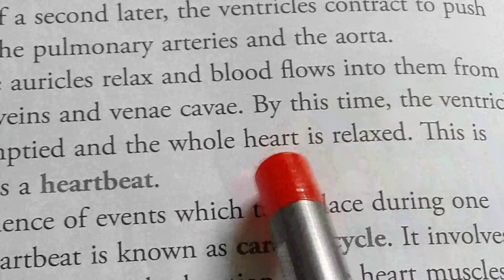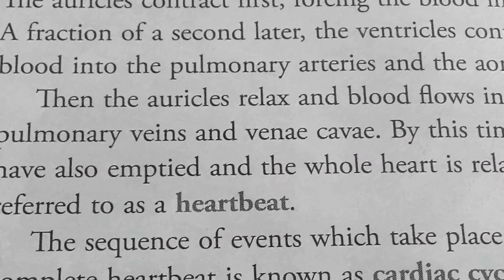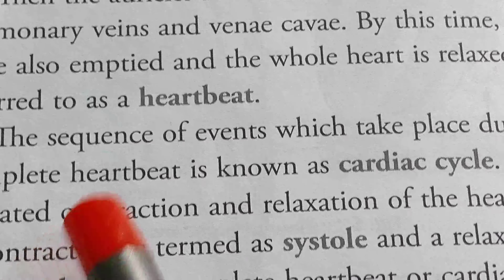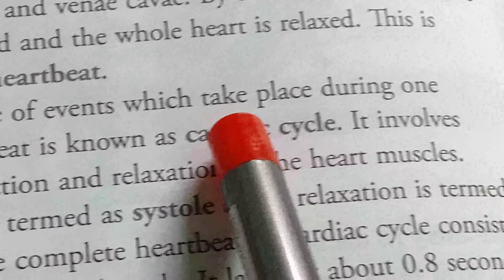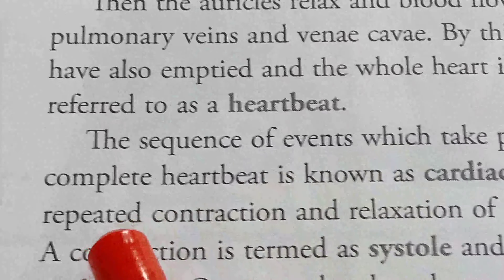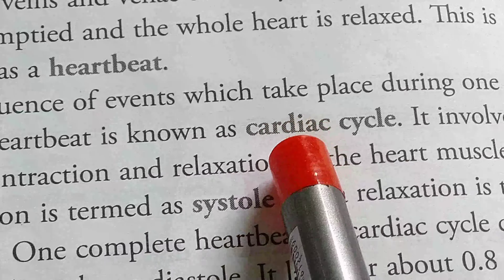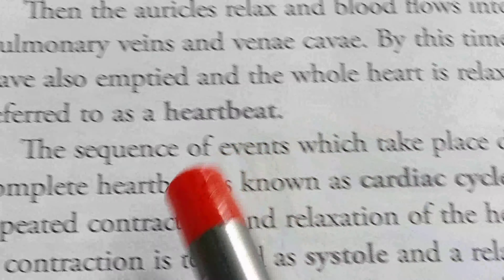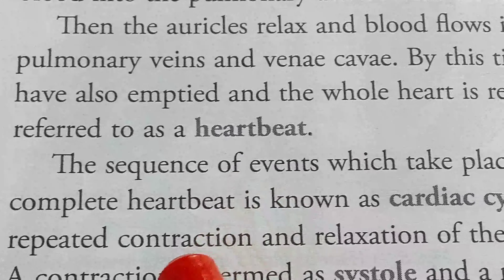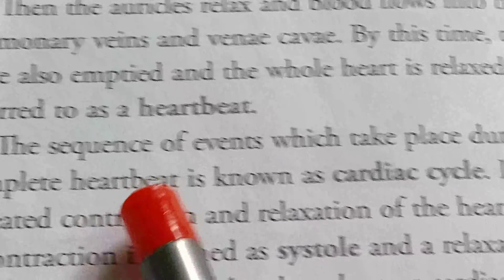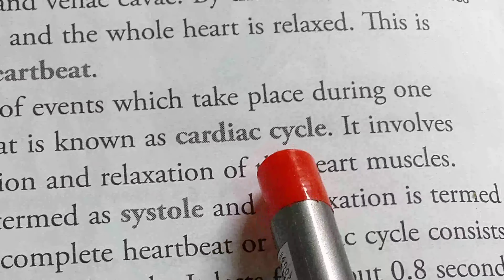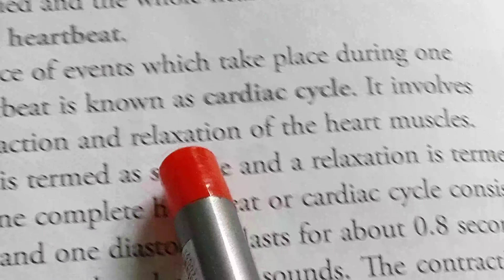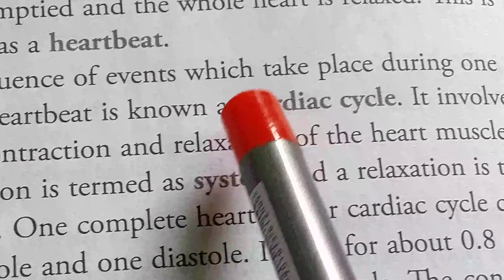When the auricles receive blood from the pulmonary veins and vena cava, the ventricles are also relaxed. This is referred to as one heartbeat. The sequence of events which take place during one complete heartbeat is known as the cardiac cycle. It involves the repeated contraction and relaxation of heart muscle.